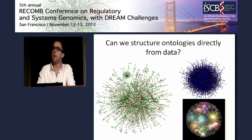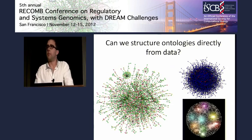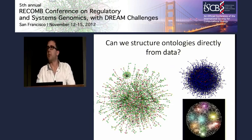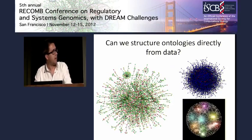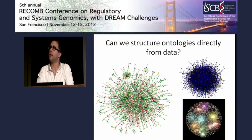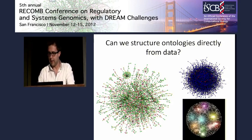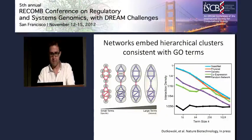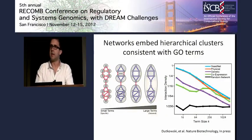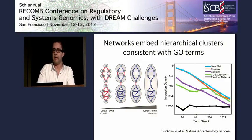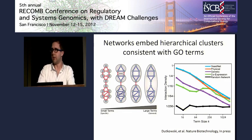We asked whether we could use large networks of molecular interactions — whether physical protein-protein interactions, transcriptional networks, or epistatic genetic interactions — to construct an ontology directly from data that would enable us to identify new components and processes. We started with a simpler question: whether these networks actually embed hierarchical structure that might be consistent with the gene ontology.